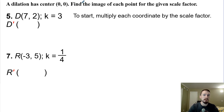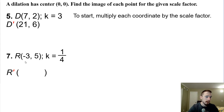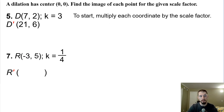Dilation center at (0, 0): find the image of each point given each scale factor. The scale factor is three and D, the pre-image, is (7, 2). Multiply the coordinates by three to get (21, 6). Then for the reduction — multiplying by one-fourth — it's going to be (−3/4, 5/4). So it's two fractions for the image of this reduction, which is R prime.